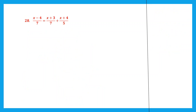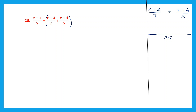Question 28. Here we have fractions on both sides — left and right. Let's first work out what's on the right hand side. We have x plus 3 by 7 plus x plus 4 by 5. Now we need to find the LCM of the denominators. Since 7 and 5 are both prime numbers, we just have to multiply those two. 7 5s are 35 and that is your LCM.